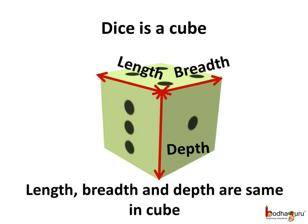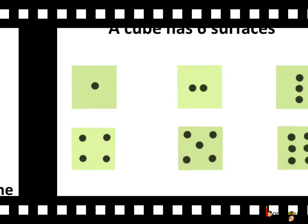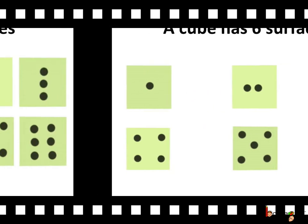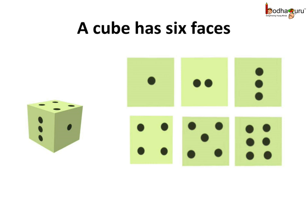This is a dice which we use for playing snakes and ladders and other board games. This solid shape is called a cube. In a cube, the length, breadth and depth are all the same. A cube looks the same from all sides — it looks like a square. A cube has 6 surfaces, and all the surfaces of a cube are square, so we can say a cube has 6 faces.